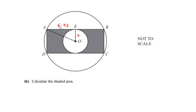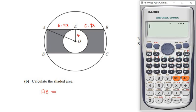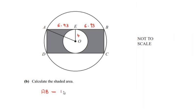From part one, AE = 6.93 centimeters. By symmetry, EB is also 6.93 centimeters. So the total length AB = 6.93 + 6.93 = 6.93 × 2 = 13.86 centimeters.